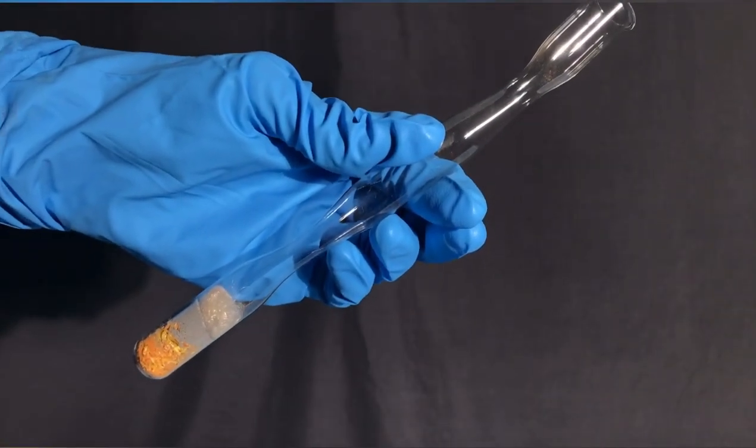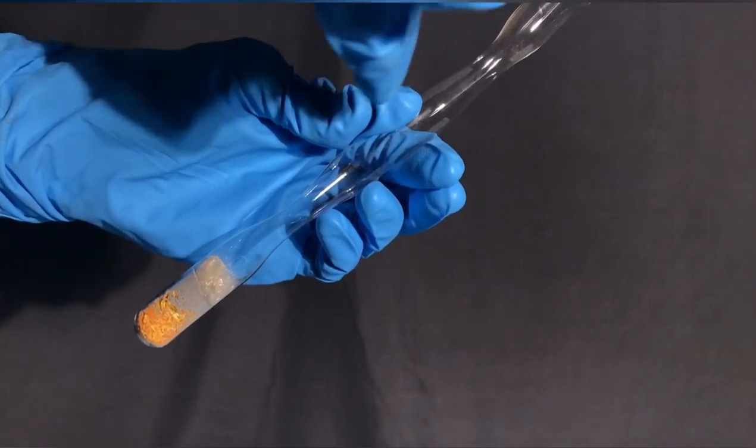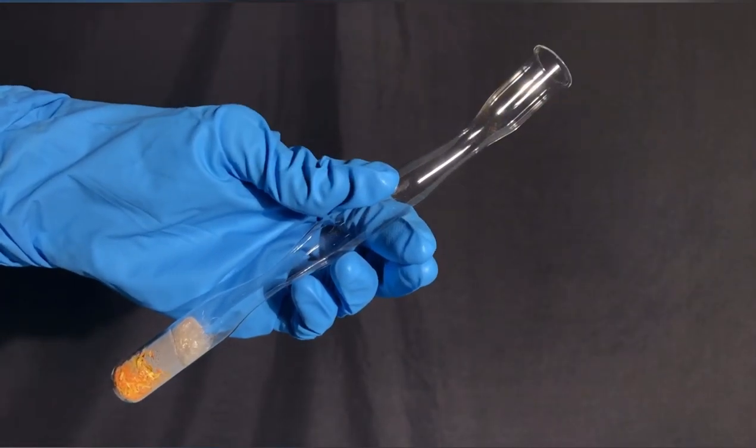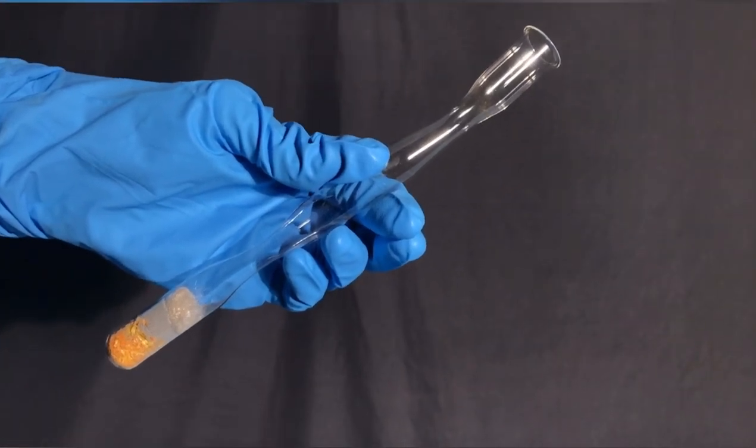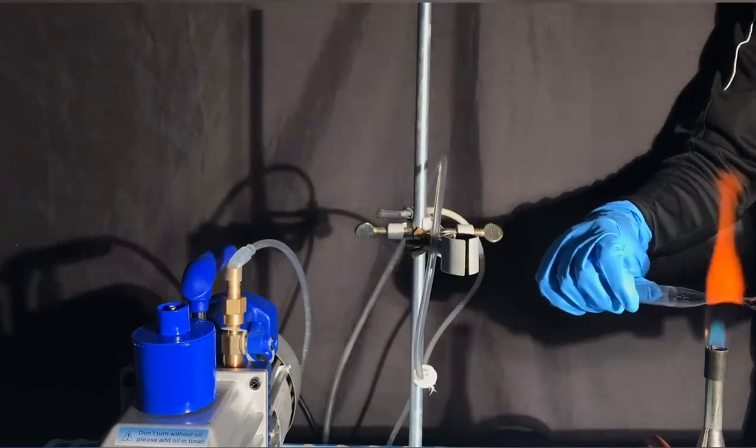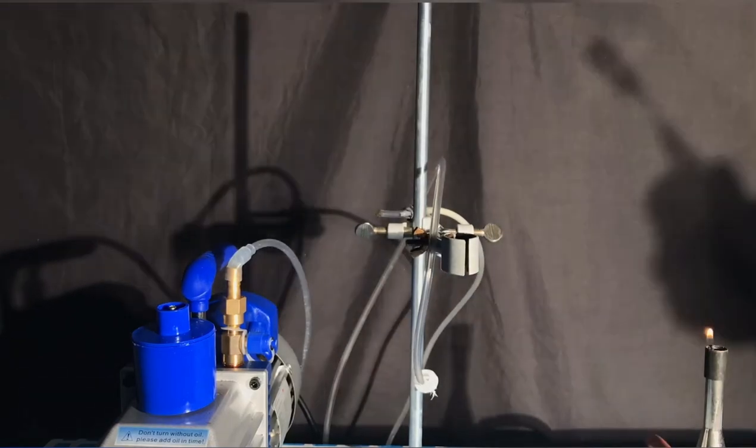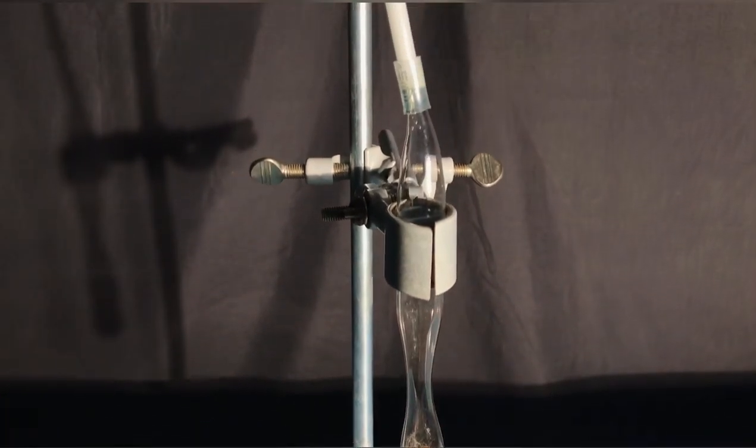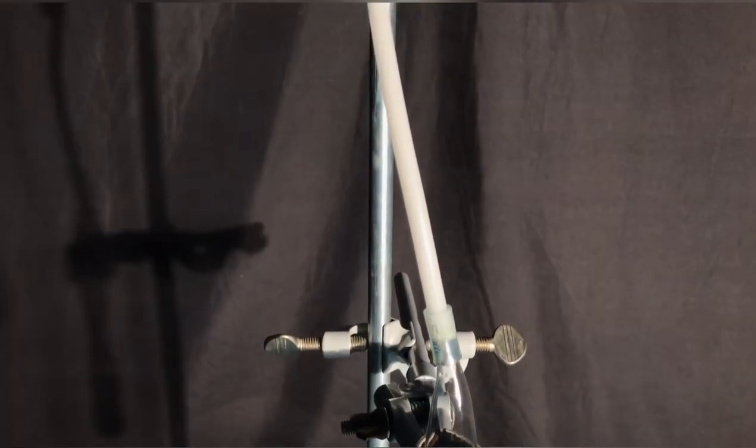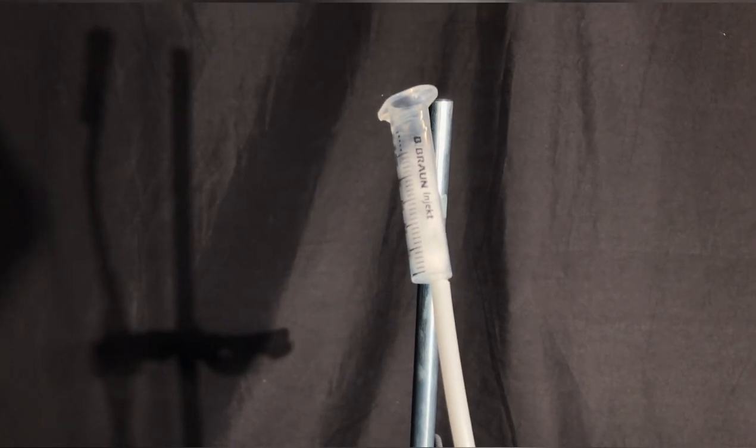In the end we were left with this 3 part ampoule. At the bottom we have the reagents, in the middle some part where to condense the arsenic, and at the top a part to connect the vacuum pump. The neck was stretched out a little longer to make sealing under vacuum easier, but it sadly broke and we fucked up. I wanted to purge the ampoule with carbon dioxide a few times and evacuate it afterwards only to seal it off.